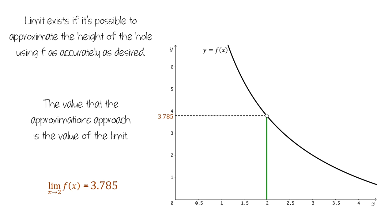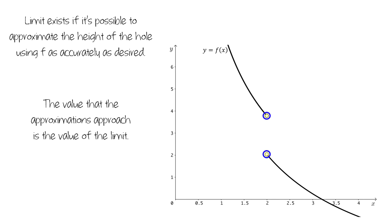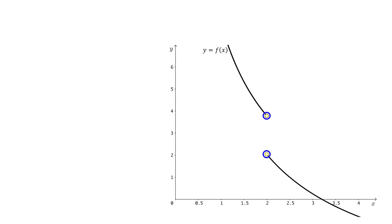Now let's think about the following scenario. What if the function looked like this? It appears that we have two different holes with two different heights, so we can't talk about the height or the value because there isn't a single height or a single value. So we need another way to think about limits that can account for this situation.